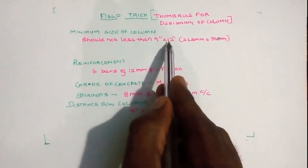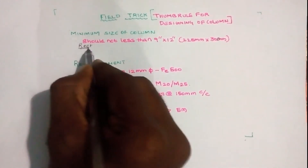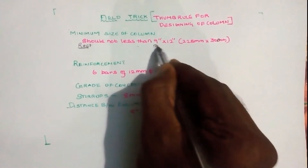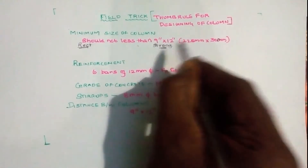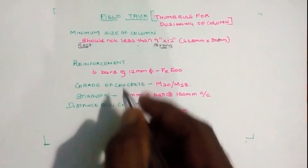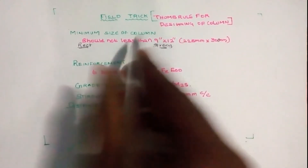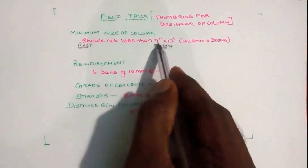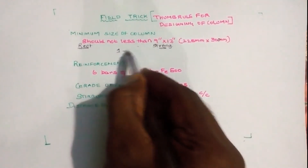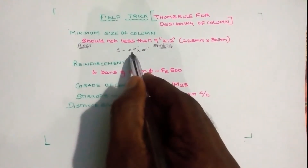The minimum size of a column should not be less than 9 inches by 12 inches. We can adjust the size and shape accordingly — for example, a square column of 9 inches by 9 inches is one option. If dimensions are smaller, such as 8 inches by 8 inches, that does not meet the minimum requirement.